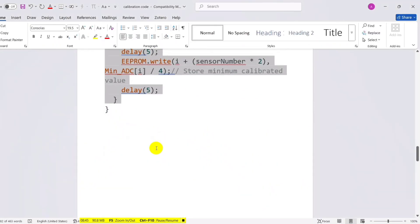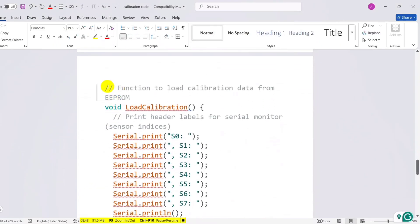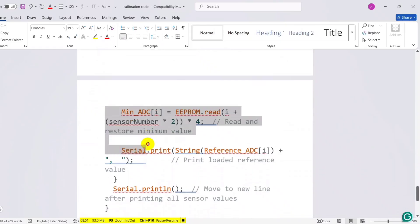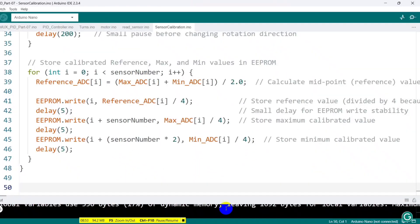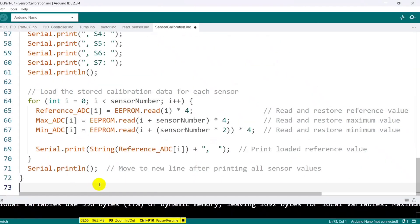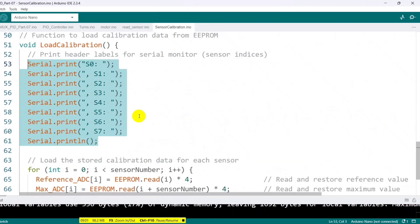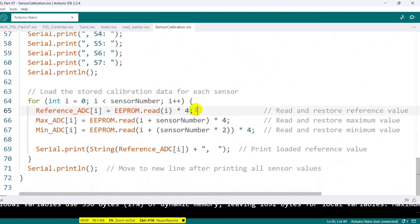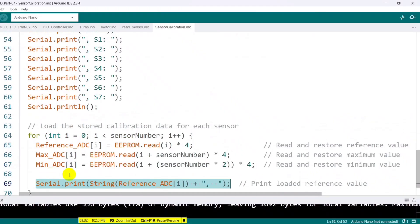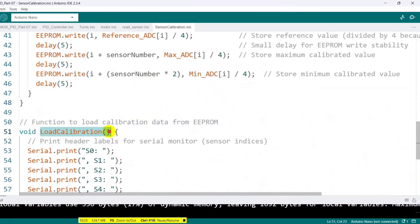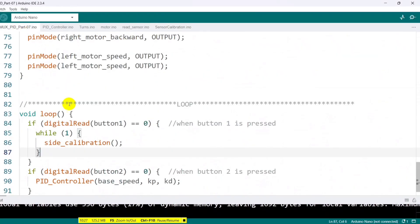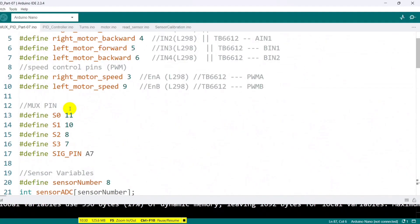Since we have written the code to save values into EEPROM, we now need a way to load these values whenever the Arduino starts or resets. So, I created a function called load calibration, which loads the saved calibration data from EEPROM. Here, I multiply each value by four because they were divided by four before saving. This function also displays the loaded reference values on the serial monitor. I then call this function inside the void setup so that the values load every time the Arduino starts or resets.